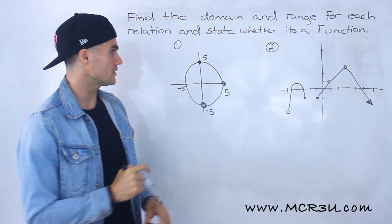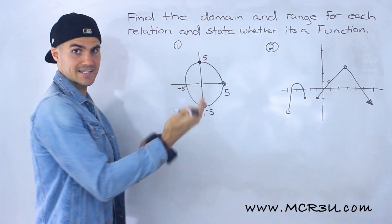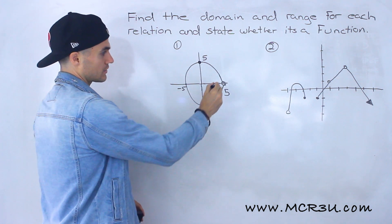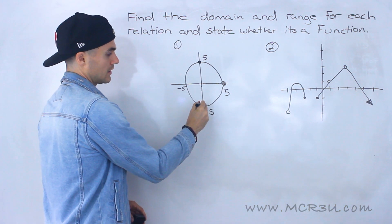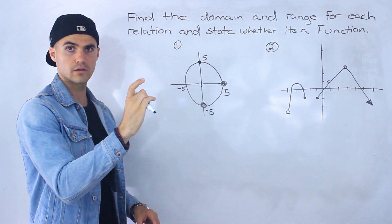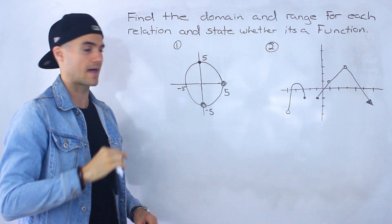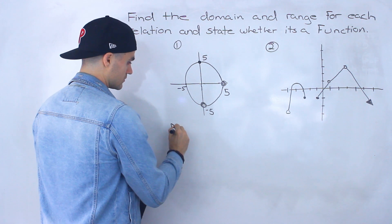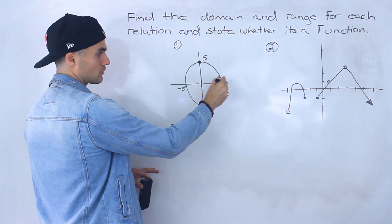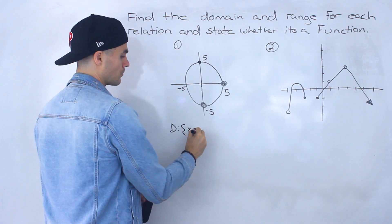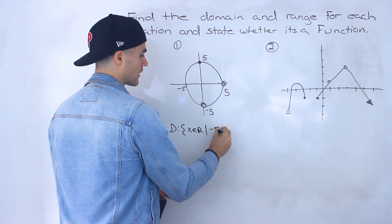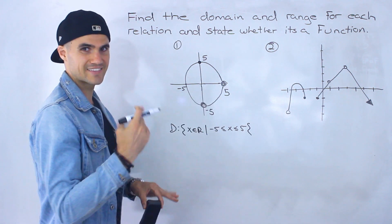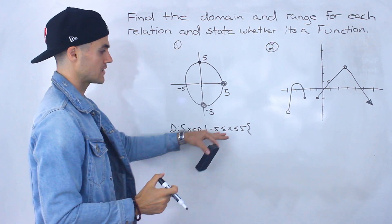Starting with number one, notice that we have this circle here. It has x and y intercepts of negative 5 and positive 5. But notice that this circle has holes here and over here. Whenever there's a hole in a relation, it means that relation is undefined at that specific coordinate.